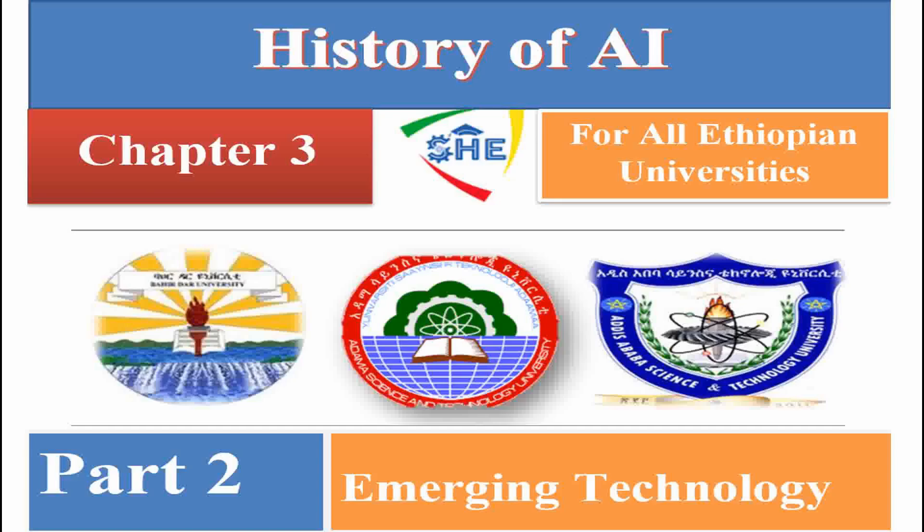What does AI mean? AI is mainly used for creating intelligent human-made machines in different aspects, for solving different complex problems.